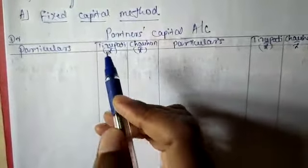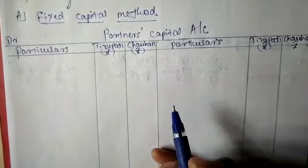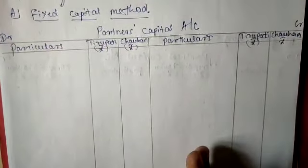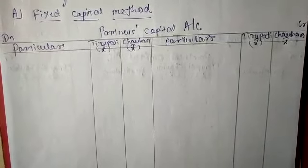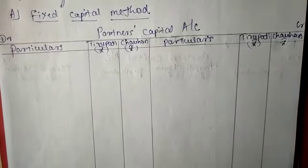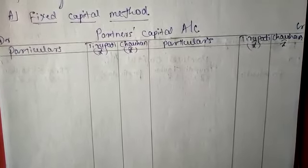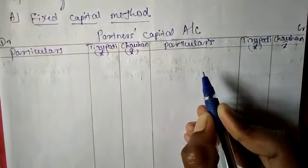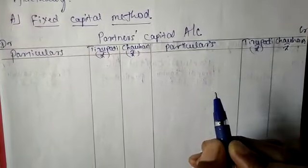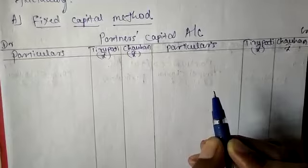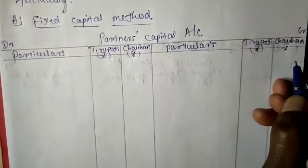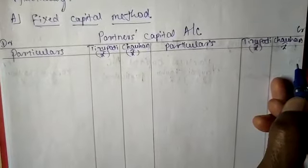Under the fixed capital method, the partner's capital account is prepared and also the partner's current account is prepared. In the partner's capital account, only capital entries are made — that is, opening capital and additional capital if any. Here in this problem, only opening capital is given, so only one entry is made on the credit side of the partner's capital account.